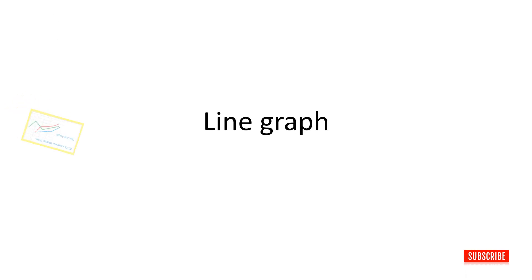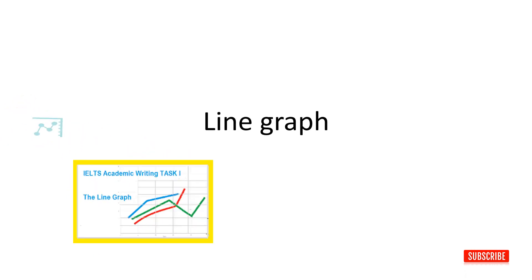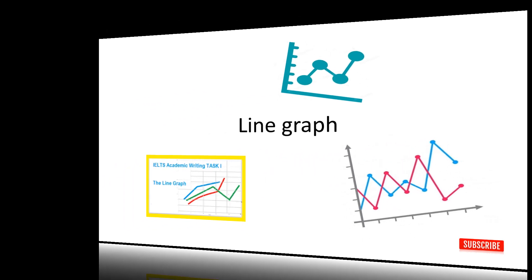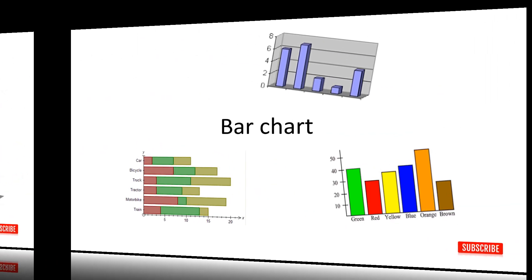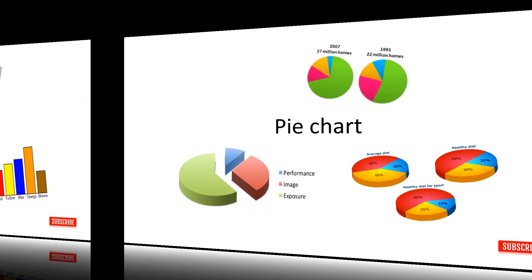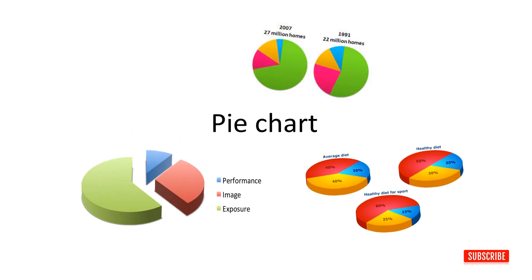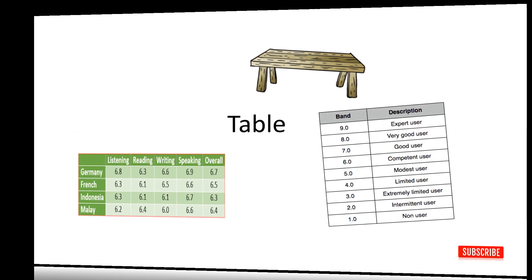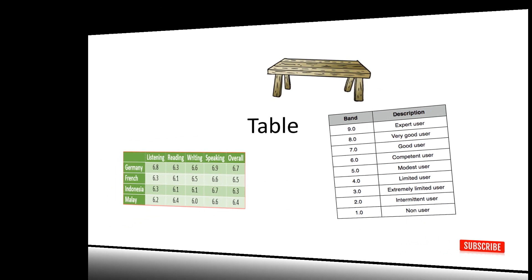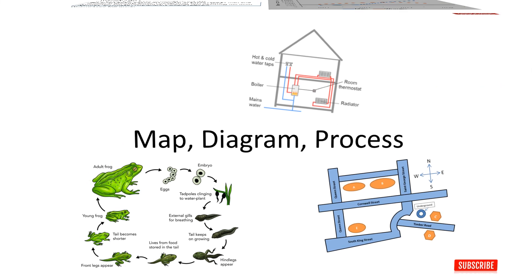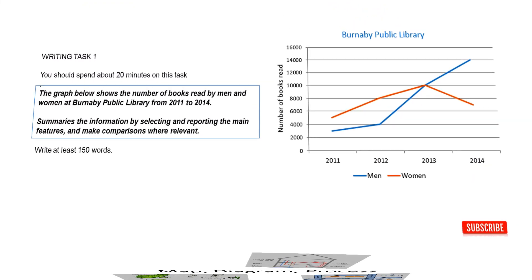Here we look at a line graph. This is one of the task 1 types which will come in the real exam. Look for the other types in my videos. Any of them would come in your exam with the same possibility, which means you should be familiar with all of them to get a high score.